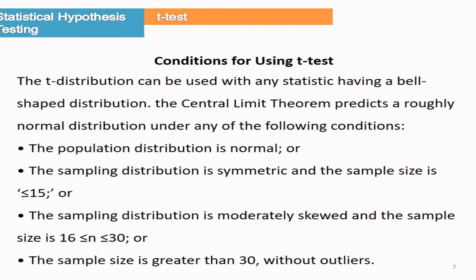We have to see the procedure. The conditions for the T-Test are: the population distribution should be normal. Although it is T-Test and T-distribution, the population from which we are taking the sample should be normally distributed. When the sample distribution is symmetric, we can take a sample size less than 30. If the distribution is slightly skewed left or right, the sample size may be around 16 or less than 30. Even if there are no outliers in the sample, you can use T-distribution for sample size greater than 30. Please go through these conditions carefully.